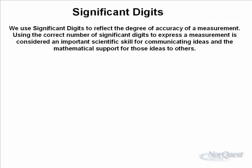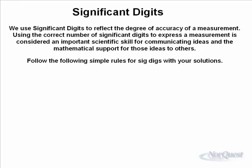So we use significant digits to reflect the degree of accuracy of a measurement. Using the correct number of sig digs to express a measurement is considered an important scientific skill. So if we're all speaking the same language scientifically, then it makes a little more sense to everybody that reads it. We know that if you said three sig digs, that means the same to you as it does to somebody halfway across the world. So here's the rules for significant digits, and we're going to follow them. It's not a huge deal, but it's important to be consistent with others.